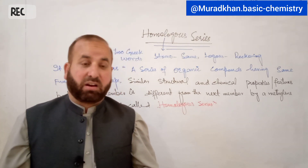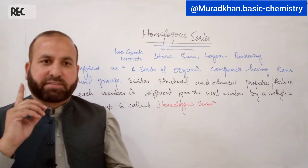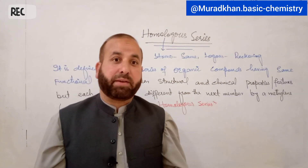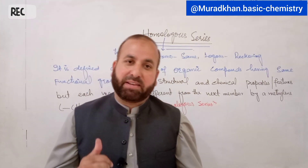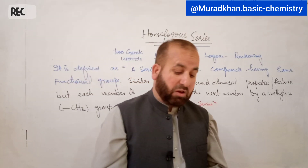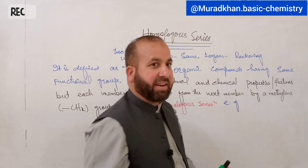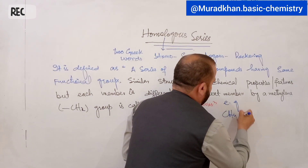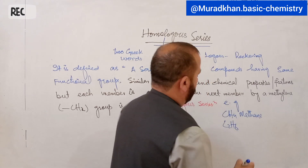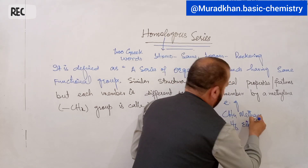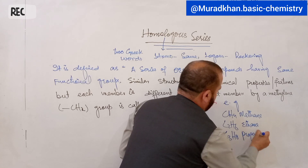A homologous series is defined as a series of organic compounds having the same functional group, similar structure, and similar chemical properties, but each member is different from the next one by a methylene group. For example, members of the alkane homologous series are: methane, ethane, propane, and butane.